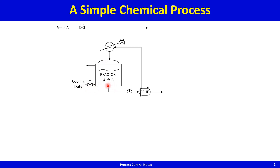The mildly exothermic reaction A goes to B occurs in this CSTR. The reaction heat is removed in the cooling jacket, which has a coolant flowing through it. The reactor conversion is not complete — maybe 30, 40, 50 percent single pass conversion — so the reactor effluent is a mixture of unreacted A and whatever B gets formed.